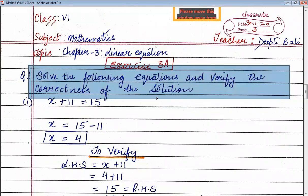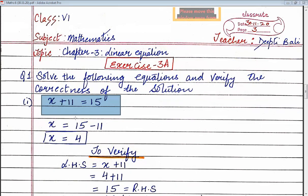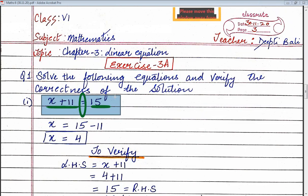In question number 1, we have to solve the following equations and verify the correctness of the solution. Our first equation is x plus 11 is equal to 15. This is a linear equation because we have an equal to sign, a left-hand side with variable and constant, and a right-hand side. A linear equation is a statement of equality in which left-hand side is equal to right-hand side.